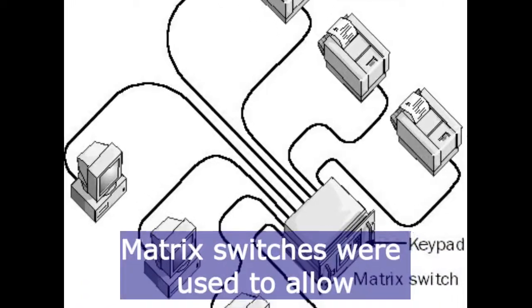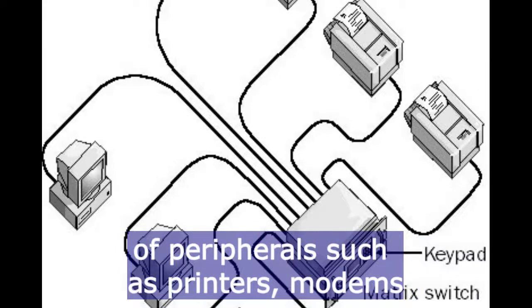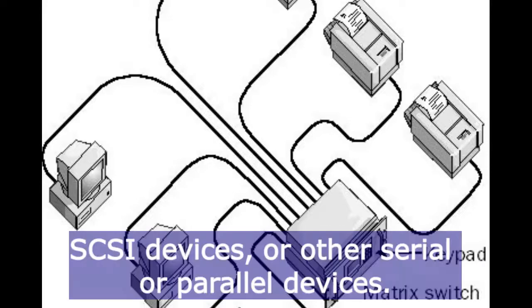Matrix switches were used to allow multiple stations to share a group of peripherals such as printers, modems, small computer system interface devices, or other serial or parallel devices.